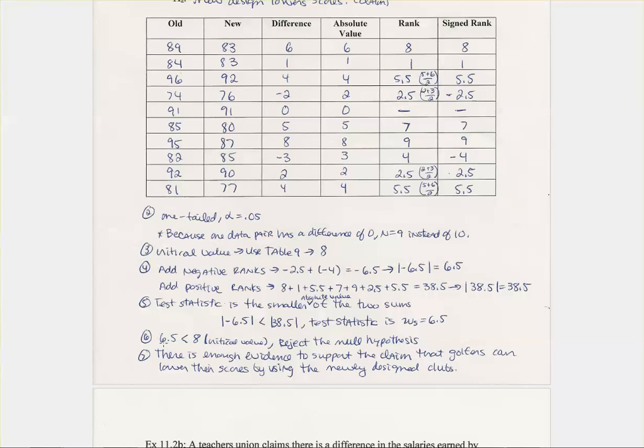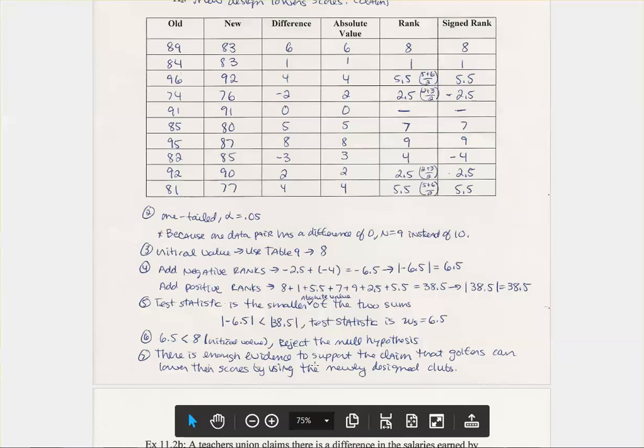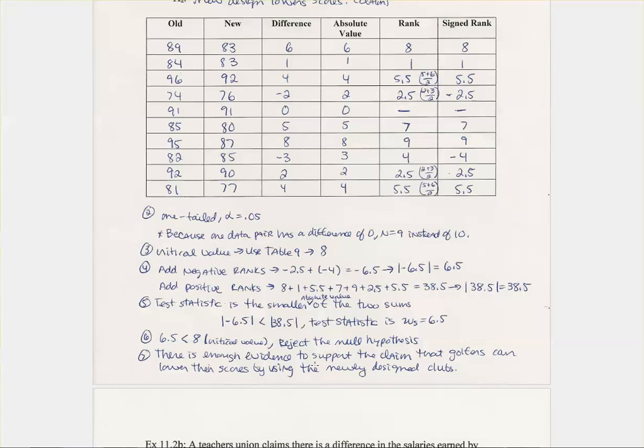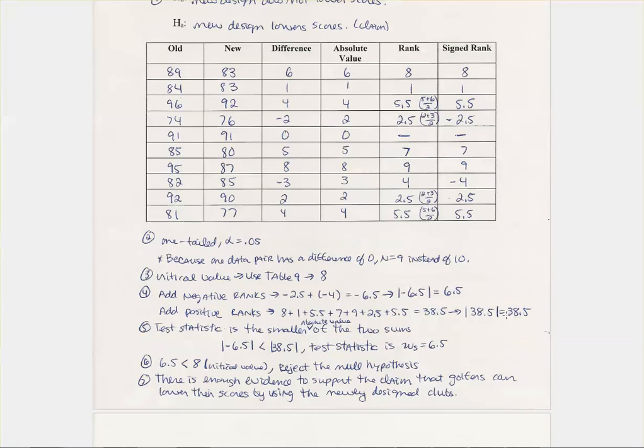Then you come down here, and because 6.5 is less than 8, which was what your critical value was up there, you can go ahead and reject your null hypothesis. If it was greater, then you would obviously fail to reject your null hypothesis. And there is enough evidence to support the claim that golfers can lower their scores by using the newly designed clubs. So I hope this helps, and if you have any additional questions, let me know.